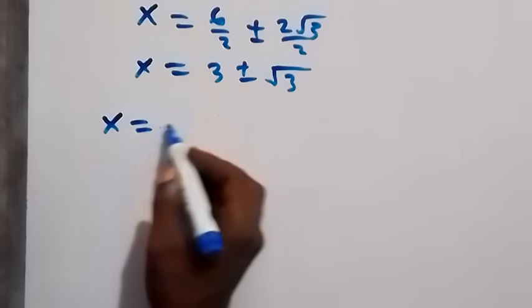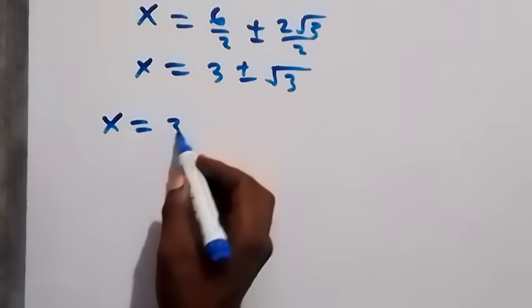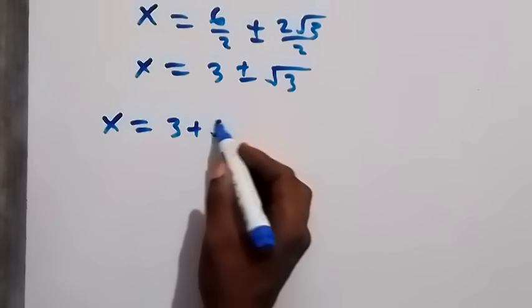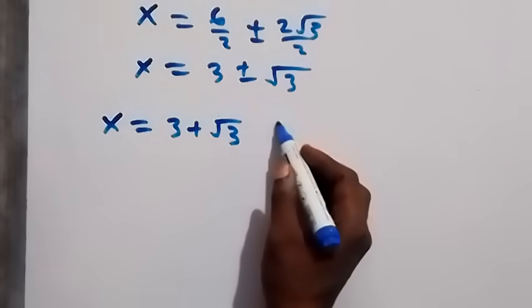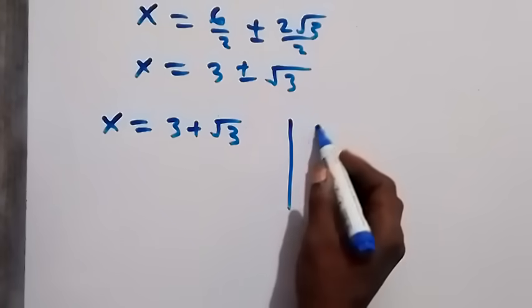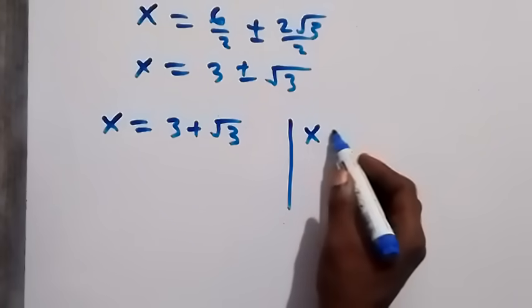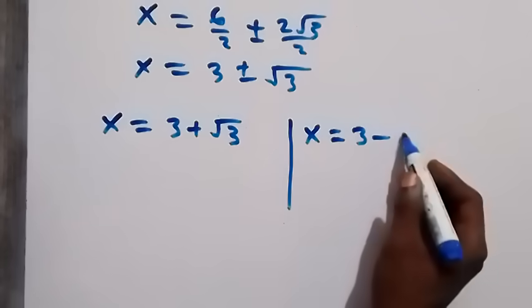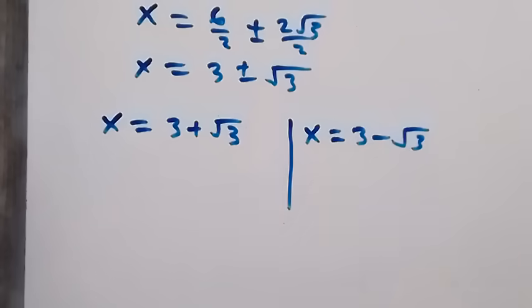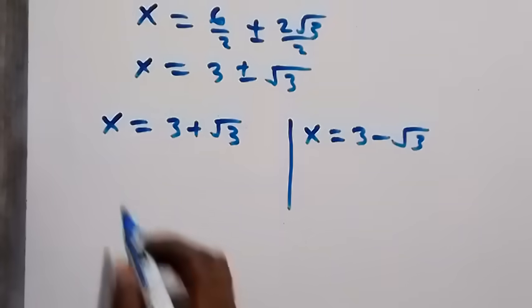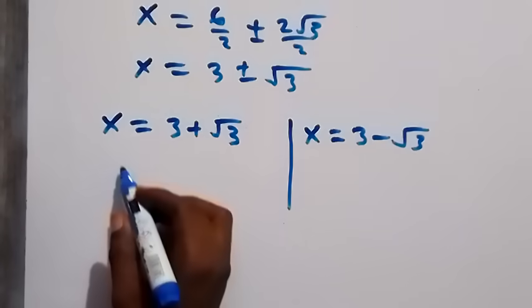So we have two possible solutions for x: the first is x equals three plus root three, and the second is x equals three minus root three.